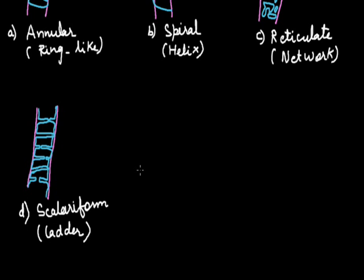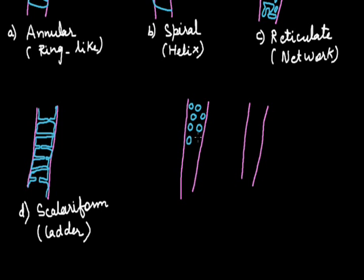Then the last category is of the pitted thickening. It is of further two types. Simple pitted that is the walls are having simple pits for the connection between the two different tracheids elements or between the different xylem elements. Second category is the bordered pits. The simple pits and the bordered pits are somewhat different in their structures. So they are categorized into two different groups. This is the tracheids element with simple pits. This is with bordered pits. Both of these are together called as pitted tracheids.